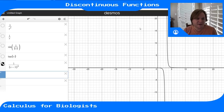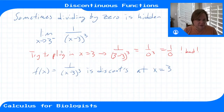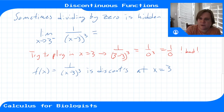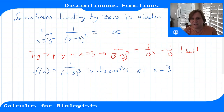The function goes off to negative infinity on one side and positive infinity on the other. There's no way to jump from one piece to the other without picking up our pencil. Even though we can't say what the function's value is at that point, we still have a limit there. As we approach 3 from the left, this goes off to negative infinity — because we're plugging in numbers smaller than 3, so the bottom is negative, and it gets larger and larger in magnitude as we get closer.